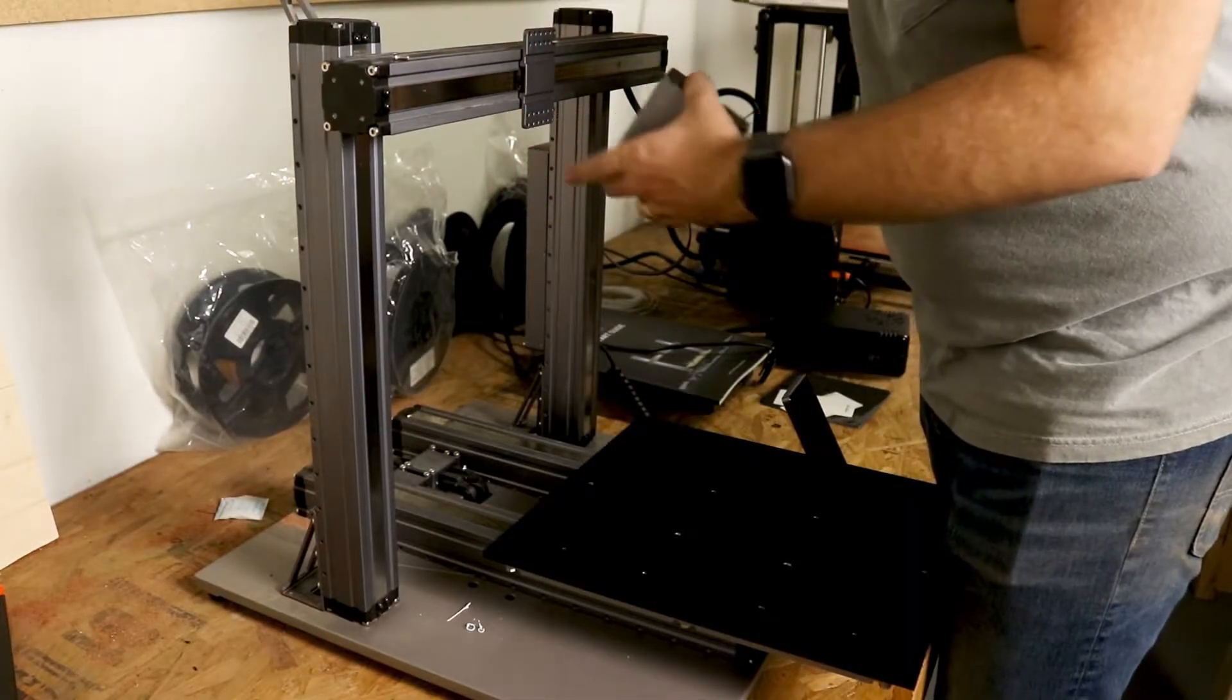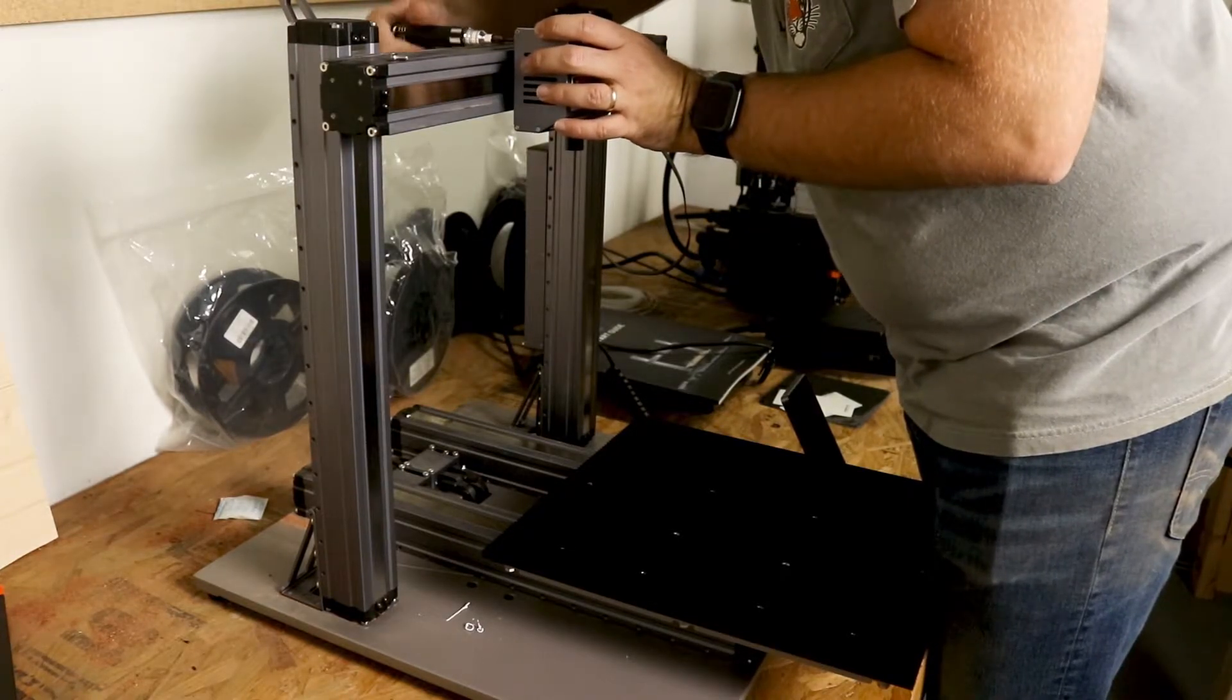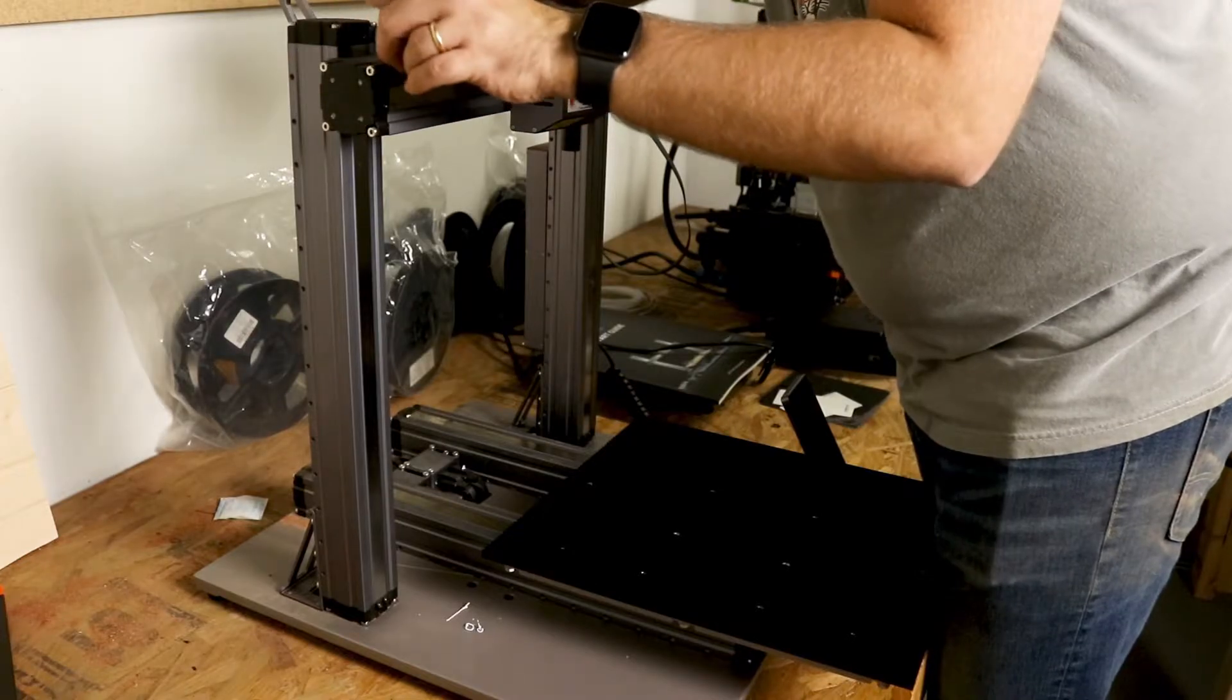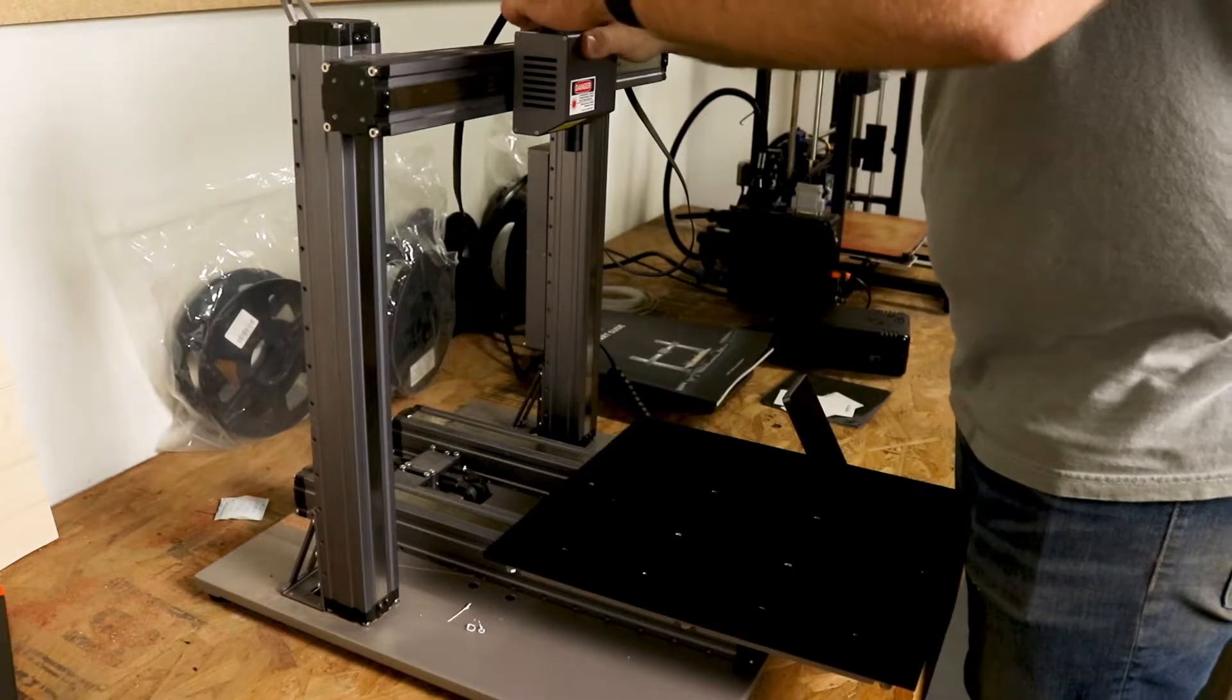Once we've got that in we are going to take the laser head. We're going to line it up with the bolt holes on the receiving end and then we're just going to screw it in the exact same way that we unscrewed the 3D printing head. Next we're going to plug in the laser to the brain of the module and that's it.